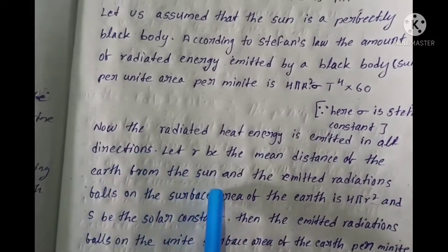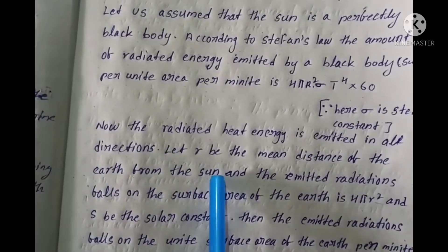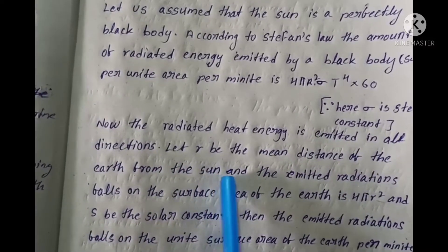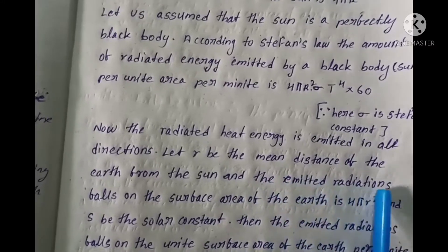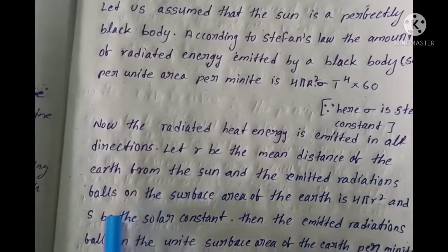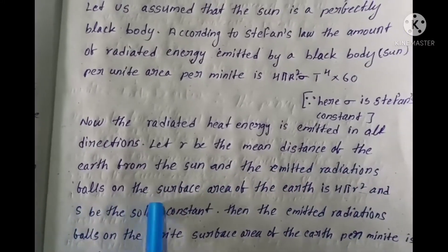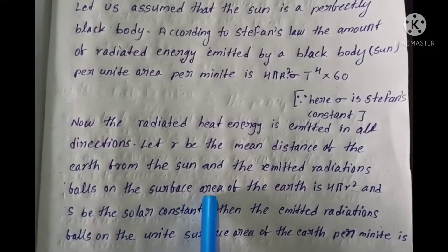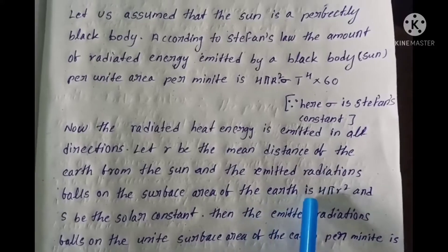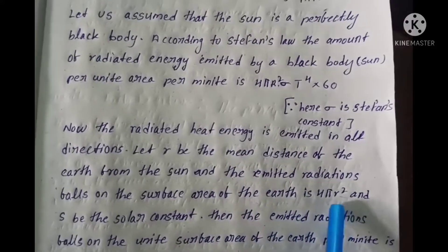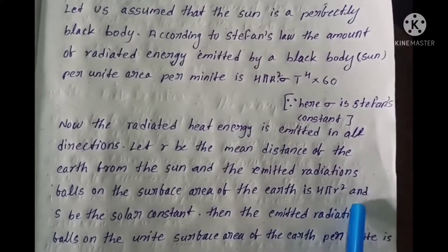Let R be the mean distance of the earth from the sun. The emitted radiation falls on the surface area given by 4πR².